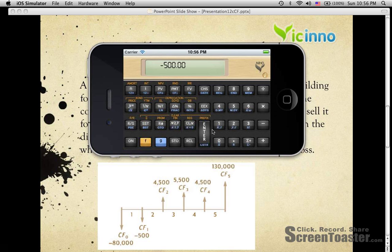And then CF2 is $4,500, and then pressing G, pressing CFJ.